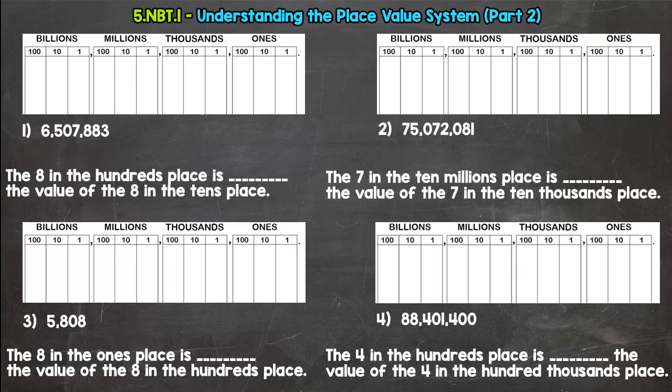And then once we're done with part 2, I also have a link to the mastery check where you are going to try some of these on your own and see how you do if you understand what's going on. So this is understanding the place value system which aligns with standard 5.NBT.1.